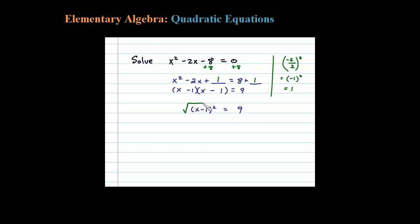So at this point in the process we can extract the root. Let's take the square root of both sides. Don't forget when you do that you need to remember to put in the plus or minus, leaves us with X minus 1 equals plus or minus 3.